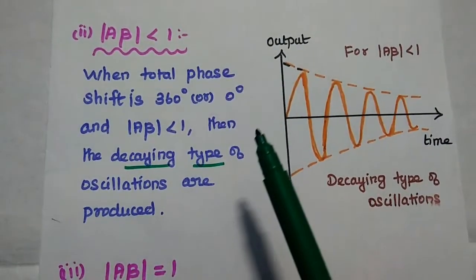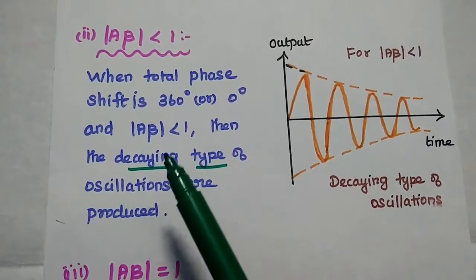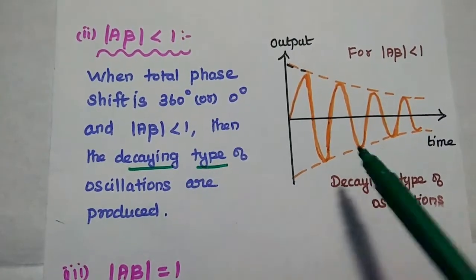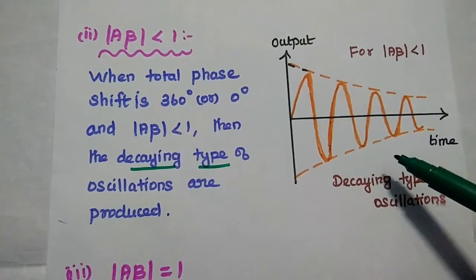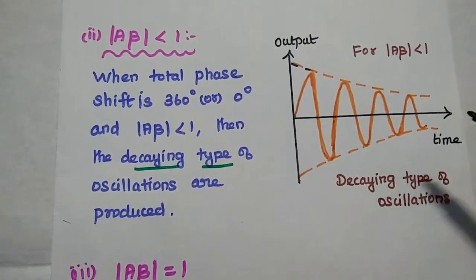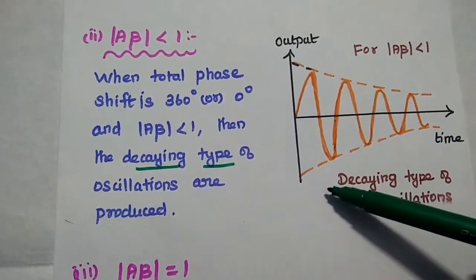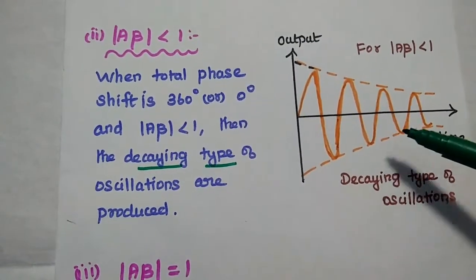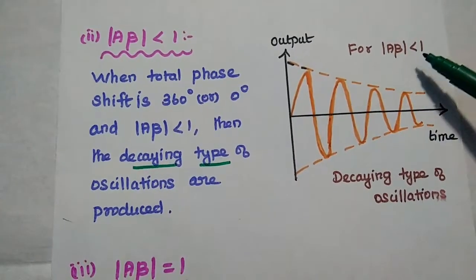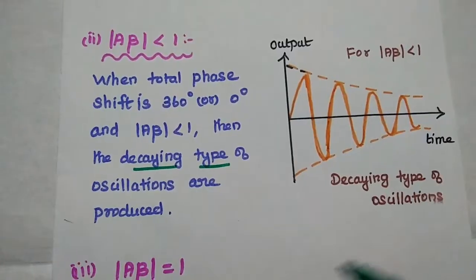The second case: when the total phase shift is 360 degrees or 0 degrees but the magnitude of Aβ is less than 1, it produces oscillations with decaying type — meaning the amplitude of the signal is getting decreased exponentially. For Aβ less than 1, decaying type oscillations are produced.